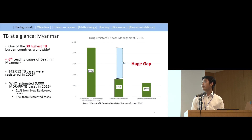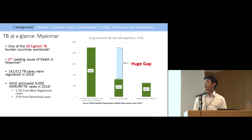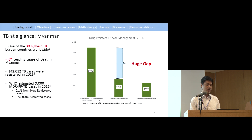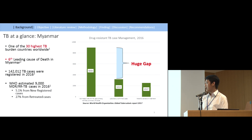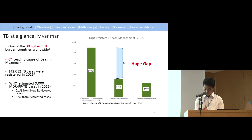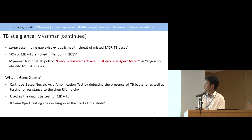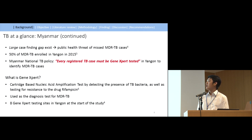In Myanmar, TB is one of the 30 highest-burdened countries worldwide, and TB is the 6th leading cause of death in the country. In 2014, around 142,000 TB cases were identified. As we do not have a good surveillance system, we rely on the WHO annual report. In 2016, WHO estimated 9,000 MDR-TB cases, but we could only identify 3,000 MDR-TB patients — most are in the gap — posing a huge public health threat.